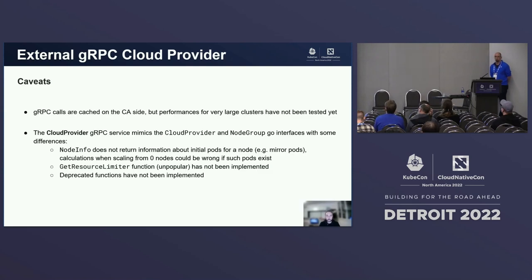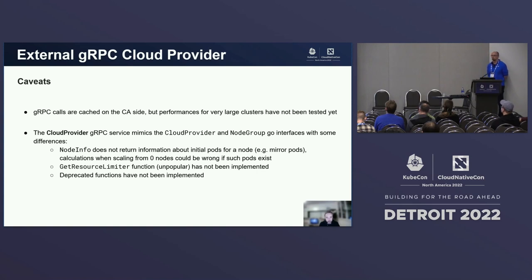So we now have a nice way to decouple cloud providers from the core CA. Here are some things to know before using the plugin system. One consideration is performance: for in-tree cloud providers, calls are of course local and as fast as they can get. With the external gRPC cloud provider, calls go over the network. Caching for RPCs has been implemented everywhere possible, but at the moment the plugin system has not been tested yet for very large clusters — clusters with thousands of nodes — so take this into account.